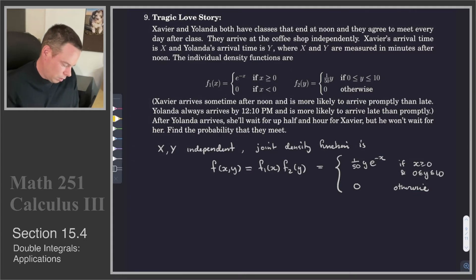We've got some conditions to look after. So after Yolanda arrives, she'll wait for up to half an hour for Xavier, but he won't wait for her. So what that means is the following. Xavier won't wait. So we're trying to figure out that domain we want to integrate over. We need to integrate over the values of the random variables which cause them to meet.